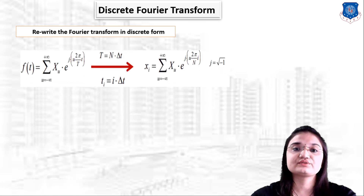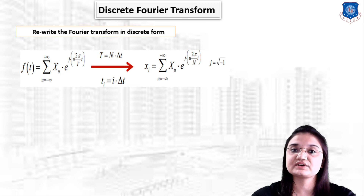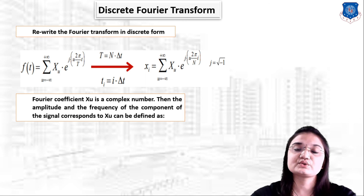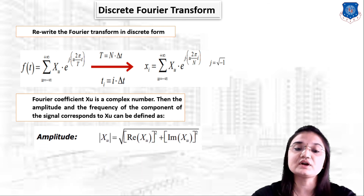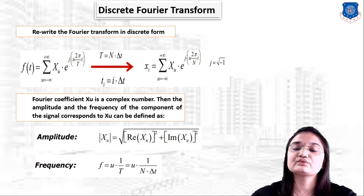Rewriting the Fourier transform in discrete form using T = N·Δt, we get: Xᵢ = Σ (u = −∞ to +∞) Xᵤ · e^(j·u·2πi/N), where j = √(−1). The Fourier coefficient Xᵤ is a complex number. The amplitude of the component is |Xᵤ| = √(Re(Xᵤ)² + Im(Xᵤ)²), and the frequency is f = u/(N·Δt).